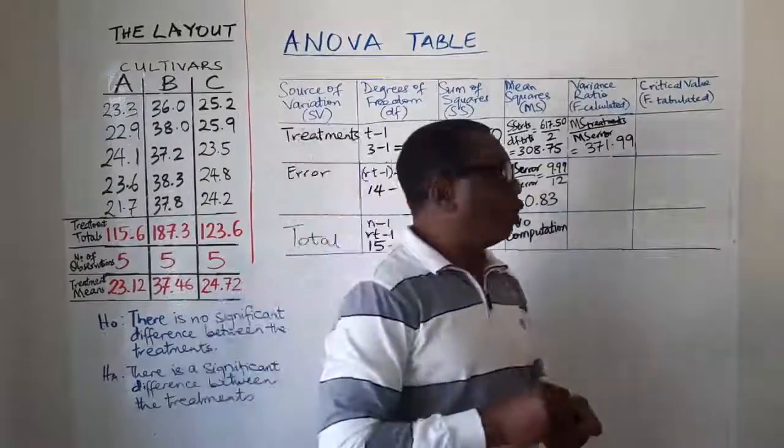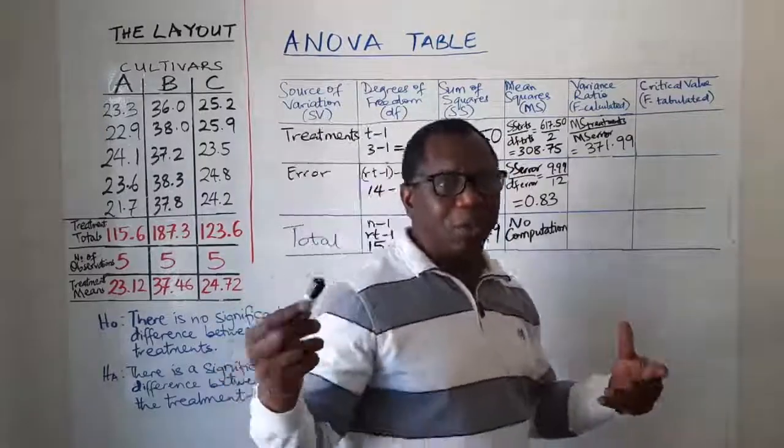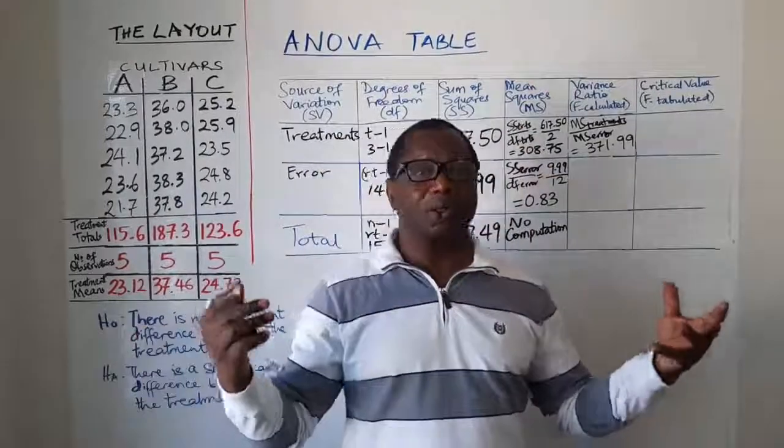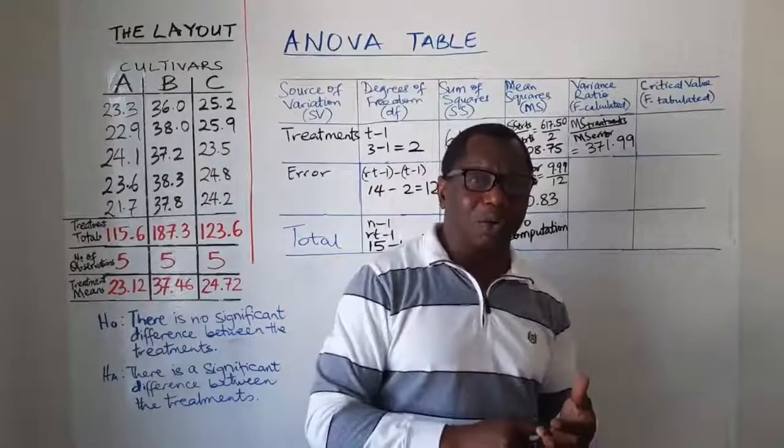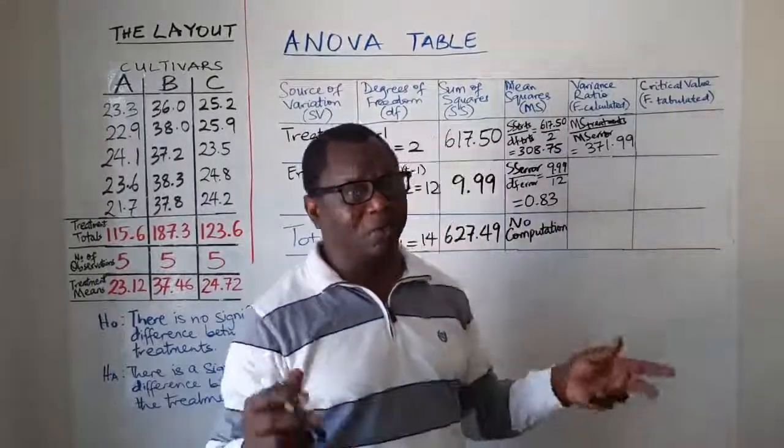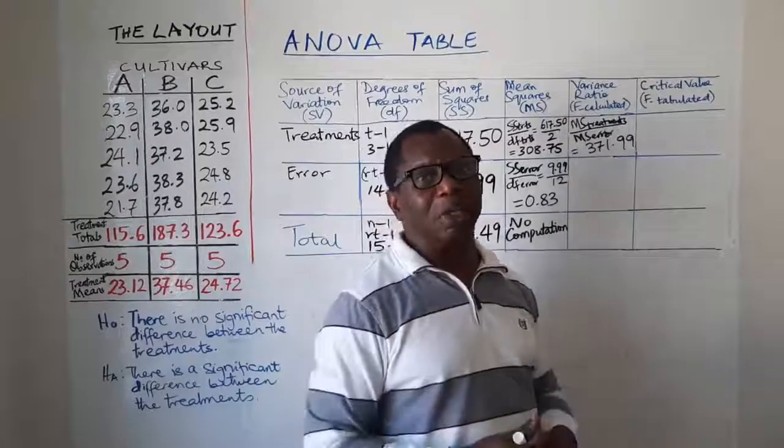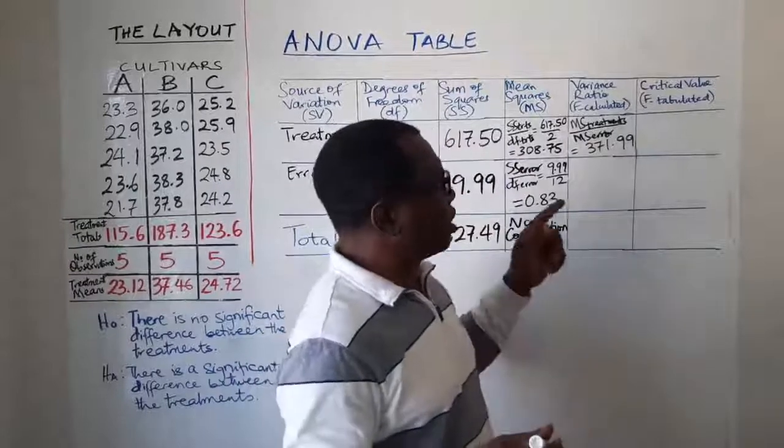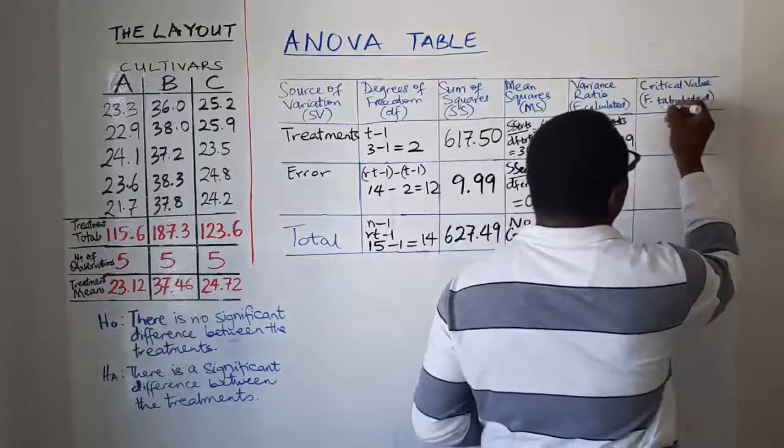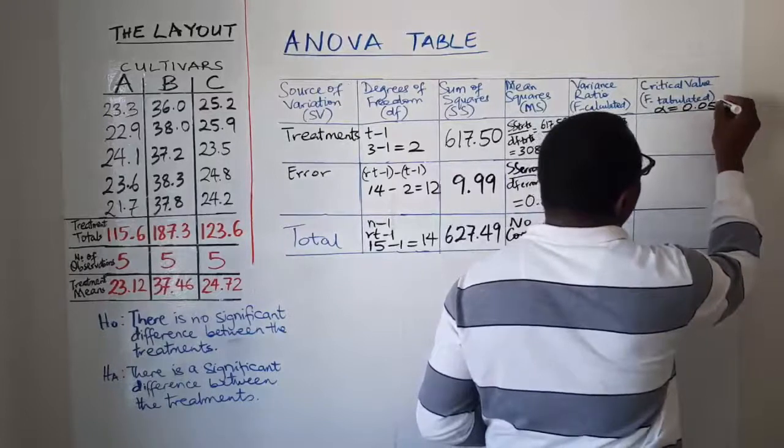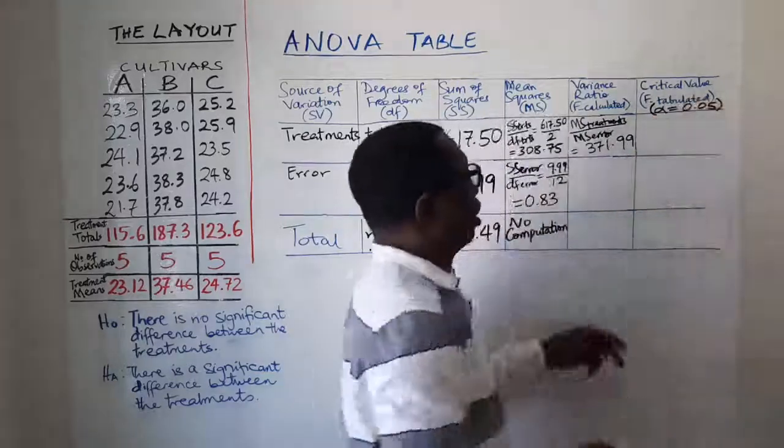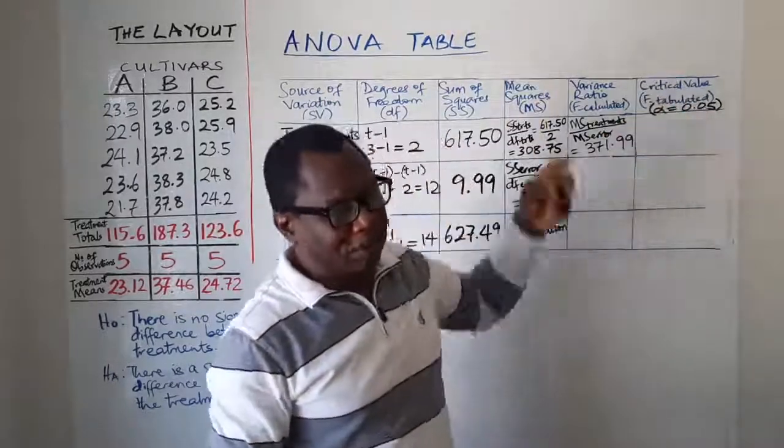Now statistical table, normally we have discussed the issue in previous videos. We have discussed the issue of level of significance. That's usually in agriculture and most life sciences. We talk of either 0.05 level of significance or alpha level of 0.01 level of significance. The commonest one we normally use in agriculture is 0.05. So we will look at this value at alpha equals 0.05. That's level of significance.